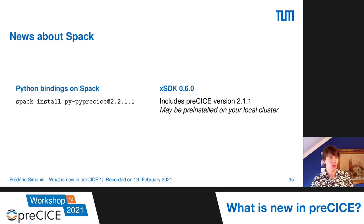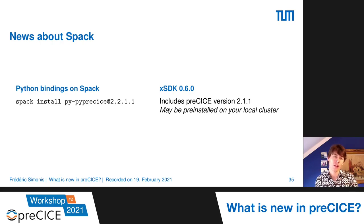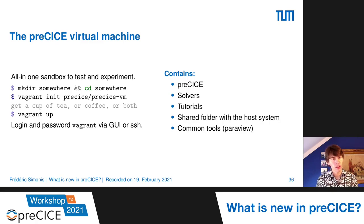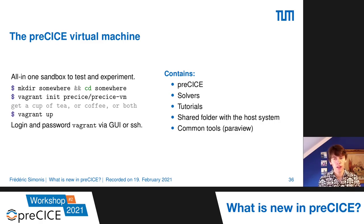Some Spack news: we managed to port the Python bindings to Spack — we created the Spack package and it has also been merged upstream. Also, XSDK 0.6.0 was released including preCICE version 2.1.1. In the future, preCICE could be pre-installed on your local cluster or supercomputer. The idea was to create a virtual machine acting as an all-in-one sandbox to test, experiment, or maybe even develop. It contains preCICE, all the solvers we currently have, tutorials, and common tools like ParaView.